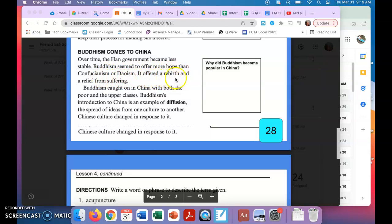Buddhism seemed to offer more hope than Confucianism or Daoism. It offered a rebirth and a relief from suffering. Buddhism caught on in China with both the poor and the upper classes.